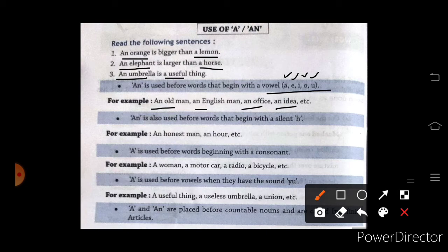An is also used before words that begin with silent h. Honest. The sound doesn't relate with h. H ki sound nahi hai. O aur a ki sound hai.